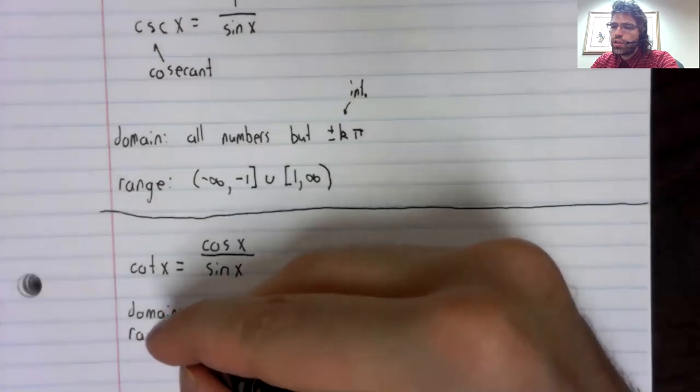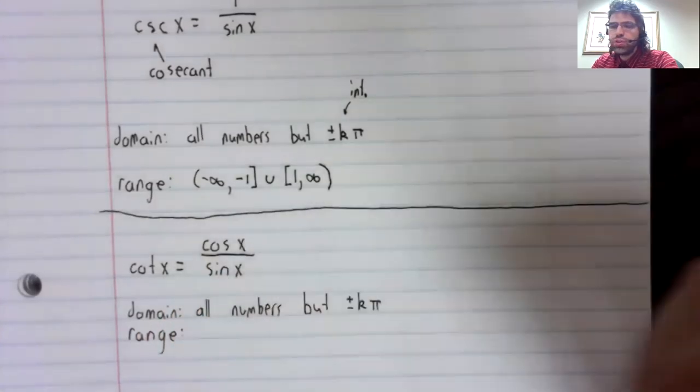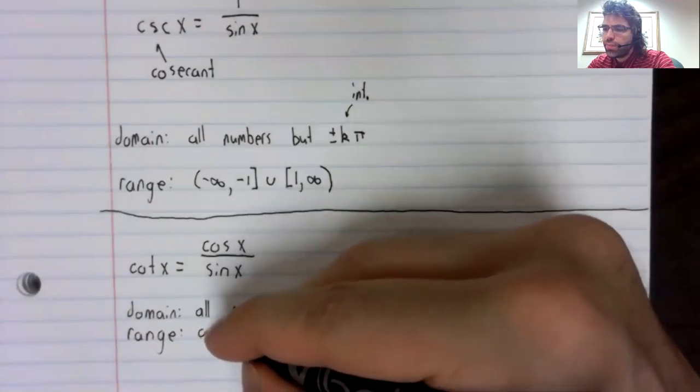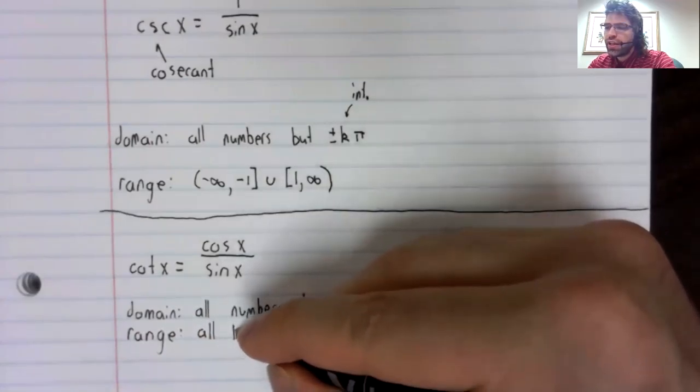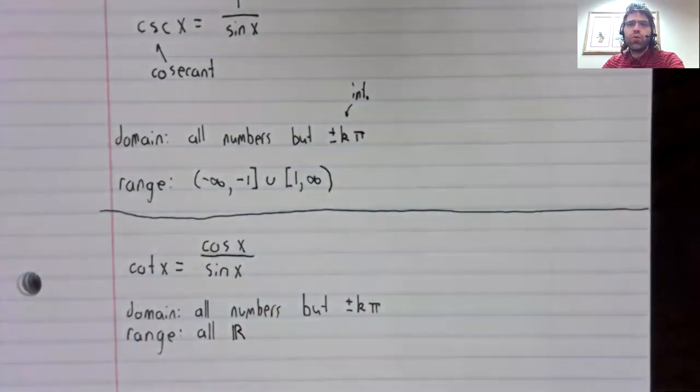And the range of the cotangent, like the range of the tangent, is all real numbers.